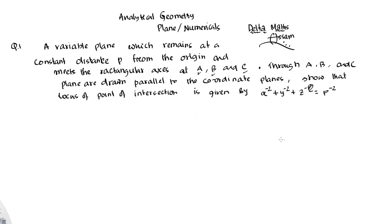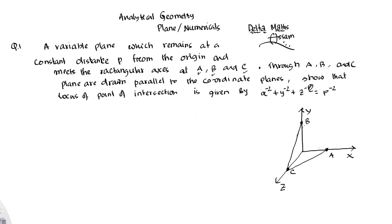So points A, B, and C. According to the question I am drawing a diagram. Suppose this is the X axis, this is the Y axis, and this is the Z axis. Points A, B, C — this is point A, this is point B, and this is point C. Point A coordinate is (a, 0, 0), B coordinate is (0, b, 0), and C coordinate is (0, 0, c).